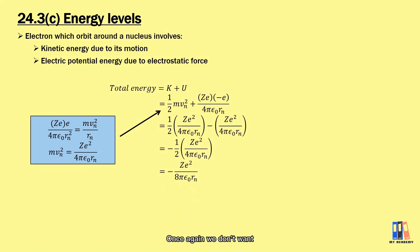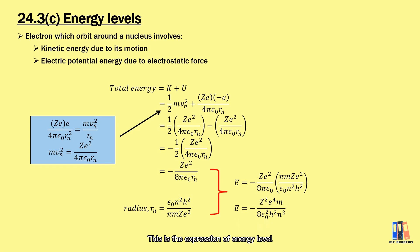So once again, we don't want something that is not constant variable in our equation. We're going to replace the radius using the equation derived. Finally, we have the energy equal to -Z²e⁴m divided by 8ε₀²h²n². So this is the expression of energy level depending on the value of n and Z.